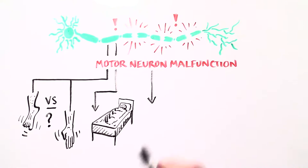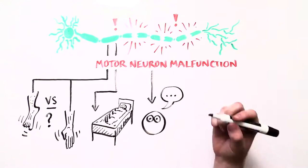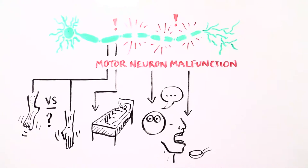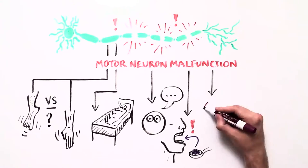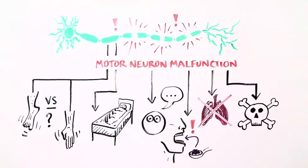Loss of motor neurons causes paralysis, resulting in difficulty speaking, swallowing, and eventually breathing, leading to respiratory failure and ultimately death.